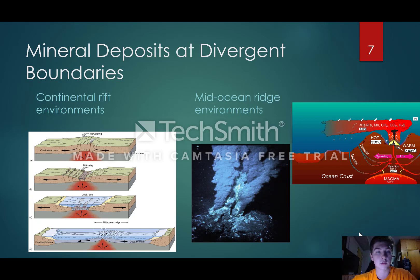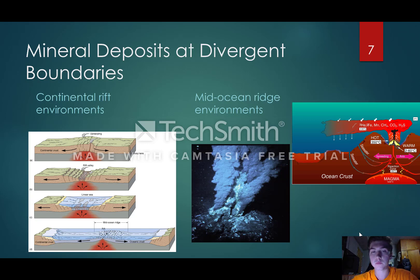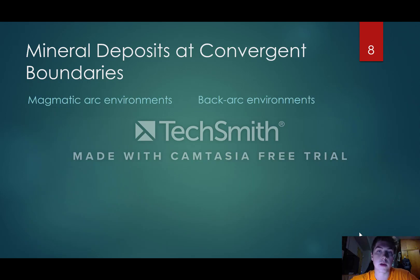Back at the continental rift environment, the magma when it rises can also be chemically weathered. As chemical weathering breaks down the magma, it releases nutrients. Once they are dissolved and mix with sediments, those sediments are moved into the rift basin. Like at divergent boundaries, deposits at convergent boundaries also occur at magmatic regions.